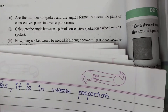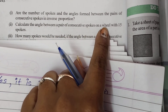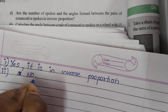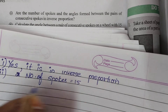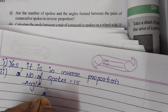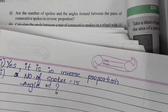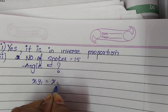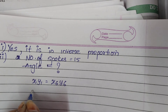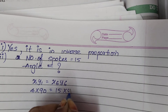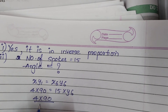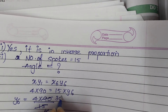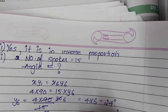Sub-question 2: Calculate the angle between a pair of consecutive spokes on a wheel with 15 spokes। तो x6 = 15, y6 = ? Formula: x1y1 = x6y6 → 4 × 90 = 15 × y6 → y6 = 360/15 = 24°। This is your answer for sub-question 2: 24 degree।